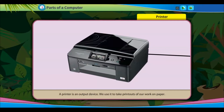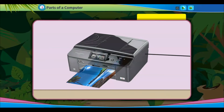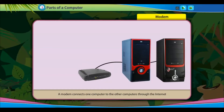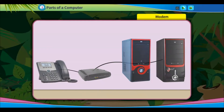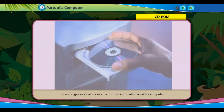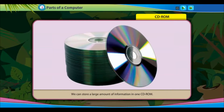A printer is an output device used to take printouts of our work on paper. A modem connects one computer to other computers through the internet and exchanges information over telephone lines. CD-ROM stands for Compact Disc Read Only Memory — it is a storage device that stores information outside a computer, and we can store a large amount of information on one CD-ROM.